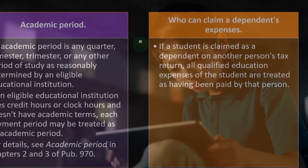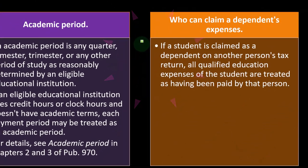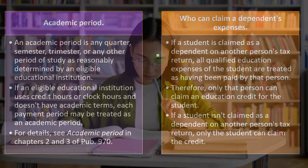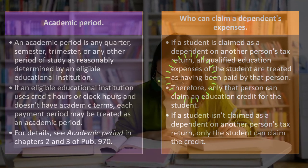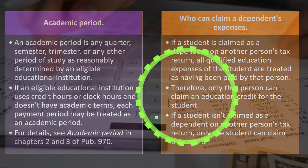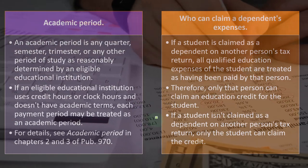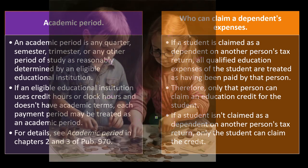Who can claim a dependent's expenses? If a student is claimed as a dependent on another person's tax return, all qualified education expenses of the student are treated as having been paid by that person. Therefore, only that person can claim an education credit for the student. If a student isn't claimed as a dependent on another person's tax return, only the student can claim the credit. This makes sense — if the student is someone else's dependent, that person is likely paying over half the student's expenses, so they would be the one able to take the credit.